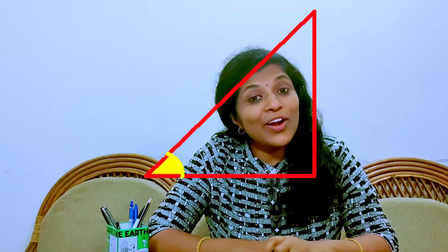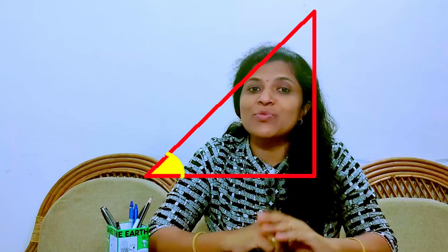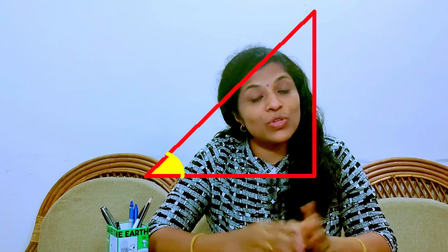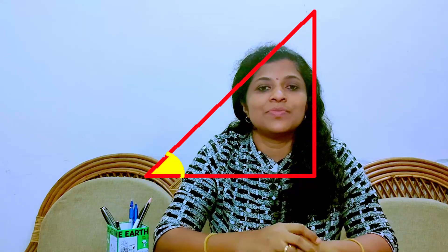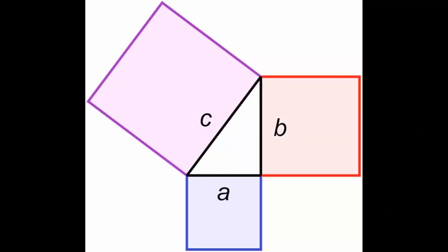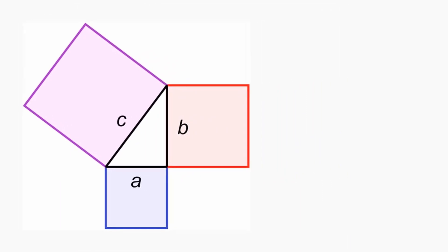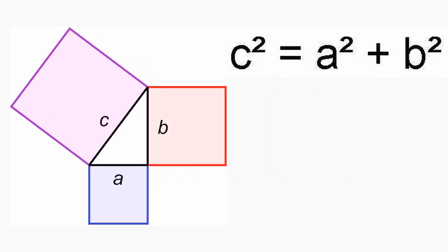This is a wonderful shape and we get some real interesting results when we play around with these sides. Pythagoras drew three squares with each side of the triangle as a side of each square. He found out that the area of the square drawn on the hypotenuse is equal to the sum of areas of the squares drawn on the base and the opposite side. This is what we learn as the Pythagorean theorem.